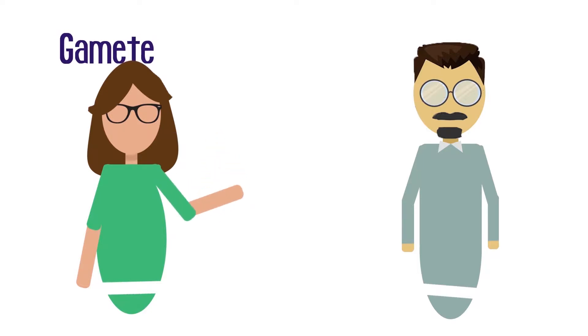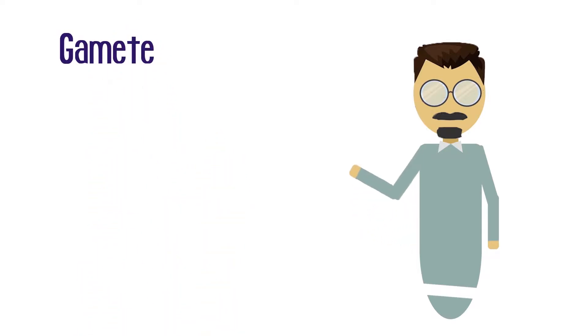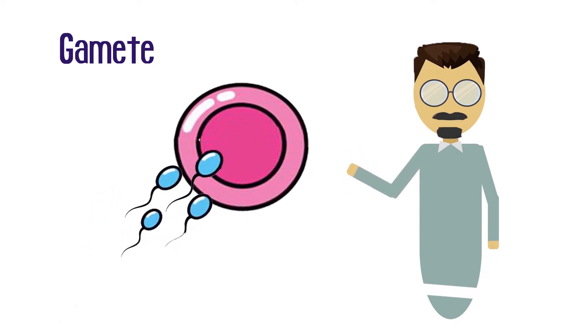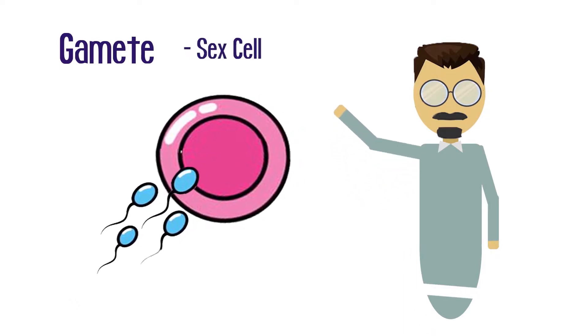So what is a gamete? Right well you know you've got a basic cell and inside that cell in a human we've got 46 chromosomes which are made up of 23 pairs. Well a gamete is a specialized cell that's had the chromosome number halved so it's ready to combine with another one to make a whole organism. So a gamete is basically a sex cell.